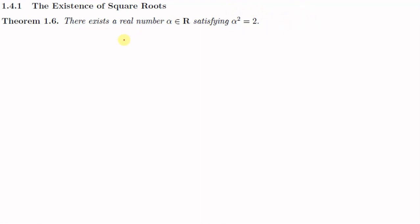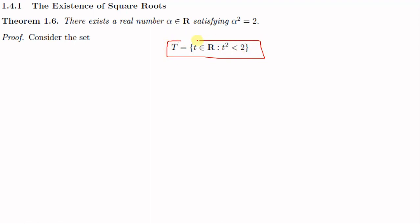To prove this theorem, we define a new set. Consider the set T equal to the set of all t element of ℝ such that t squared is less than 2. So the set T consists of all real numbers whose square is less than 2. We know that 1 squared is 1, which is less than 2, so 1 is an element of set T. Therefore, the set T is non-empty.